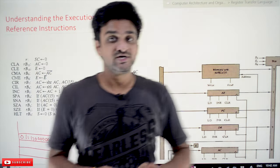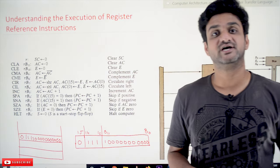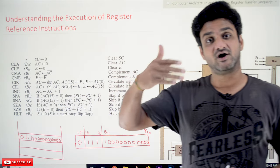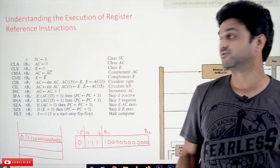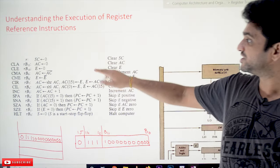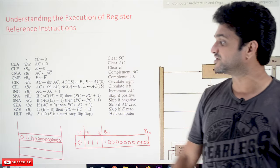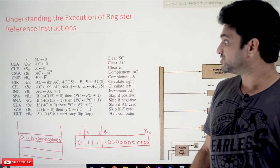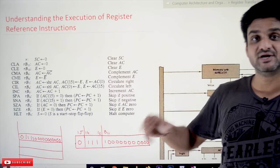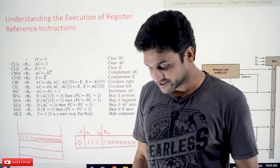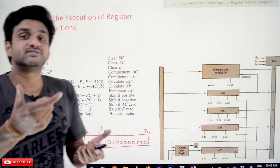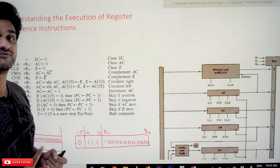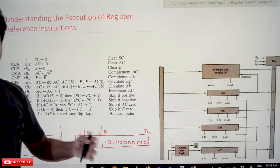Now coming to this class, we will try to understand how the register reference instructions will get executed. We have already covered all the register reference instructions that are executed on our computer. Let's have a recap of those instructions — these are the 12 instructions that will get executed on our computer. Let's try to understand this concept by using an example of one register reference instruction, and in the same way all register reference instructions will get executed.